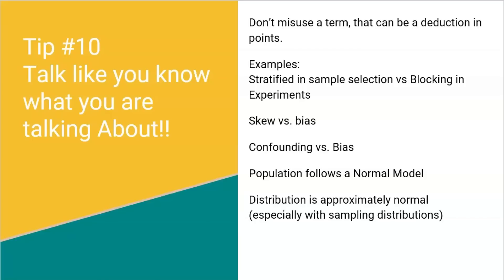Saying that a population follows a normal model is very specific — don't accidentally misuse that term. Make sure you understand it needs to be stated as normal, or if it's a sampling distribution, you need to check those conditions to confirm the sampling distribution is going to be normal. Talk like you know what you're talking about, don't misuse terms, and don't try to do too much and end up saying something that doesn't sound right.